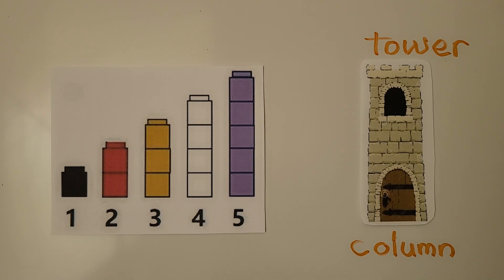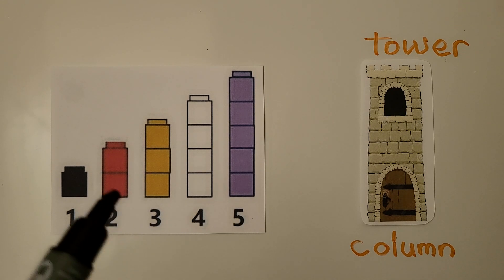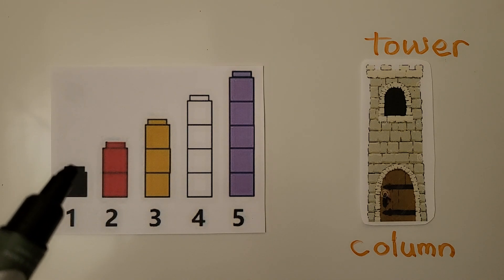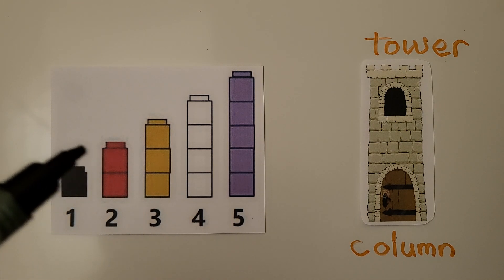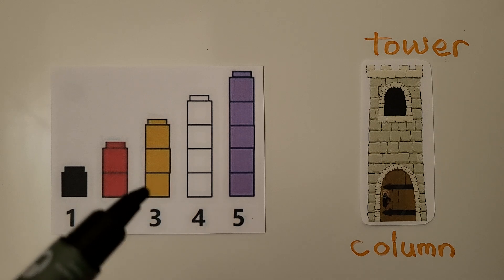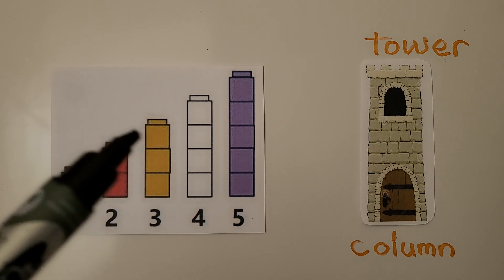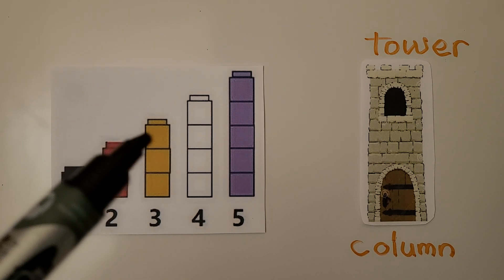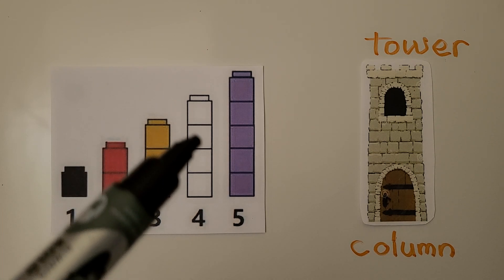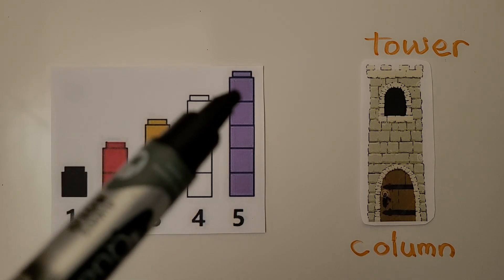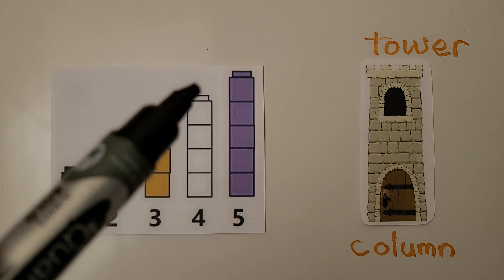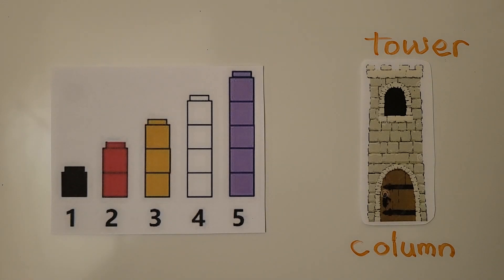Each column has one more. Two is one more than one — we can see it's one taller. Three is one more than two, four is one more than three, and five is one more than four. We can see there's one more each time. Together they look like stairs.